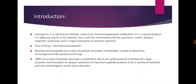Cyclosporine — spelled C-Y-C-L-O-S-P-O-R-I-N-E — is a calcineurin inhibitor used as an immunosuppressant medication. It is a natural product taken by mouth or by injection into a vein for rheumatoid arthritis, psoriasis, Crohn's disease, nephrotic syndrome, and in organ transplants to prevent rejection. Cyclosporine falls under the non-ribosomal peptide class — secondary metabolites usually produced by microorganisms like bacteria and fungi, synthesized by multidomain mega-enzymes from standard and non-proteinogenic amino acids.